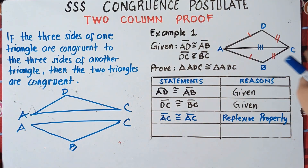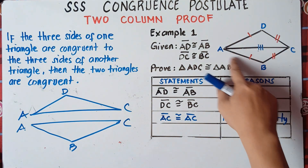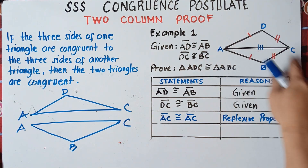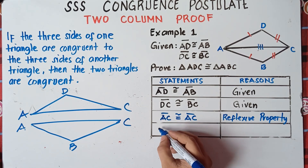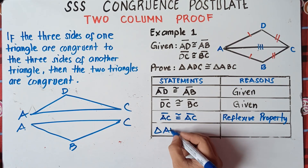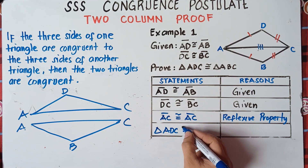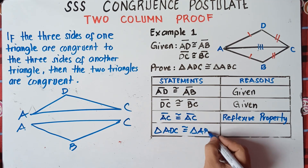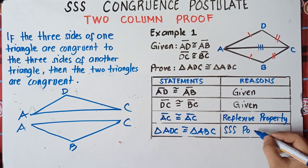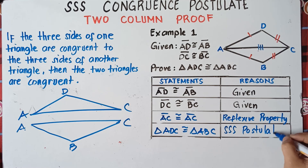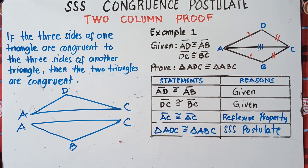So this side is congruent to this side AC — they both share it. We already have three sides that are congruent: AD and AB, DC and BC, and the shared AC. Therefore, since we already have three congruent sides, we can say that triangle ADC is congruent to triangle ABC, and the reason is the SSS postulate.